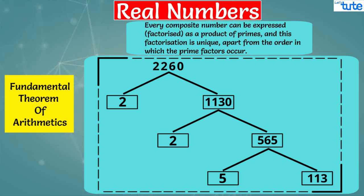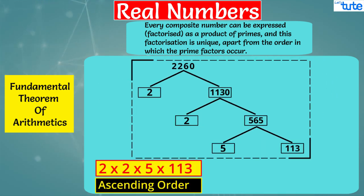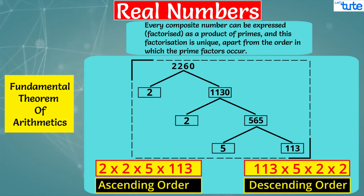The second statement is factorization is unique, apart from the order in which the prime factors occur. This means we can either write it as 2 × 2 × 5 × 113 in ascending order or in the descending order, that is 113 × 5 × 2 × 2. So here we have proved both the statements.